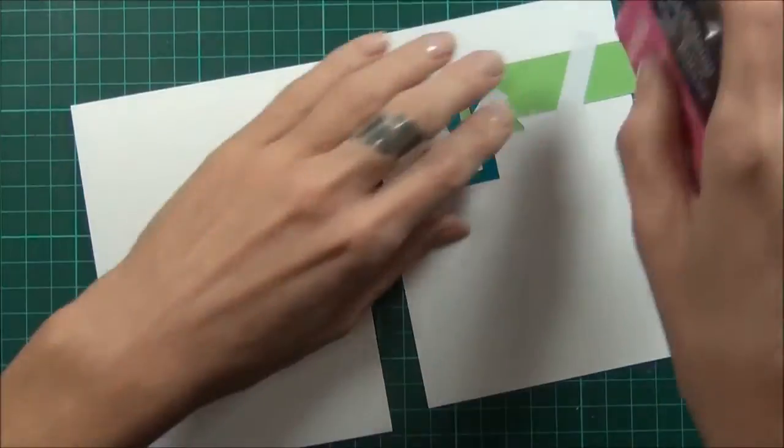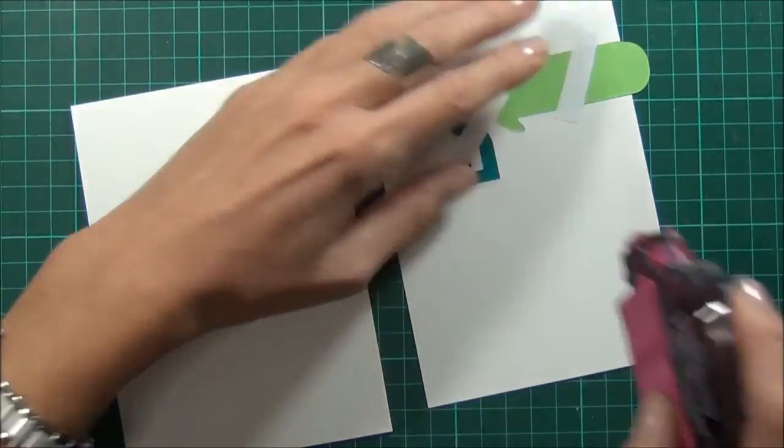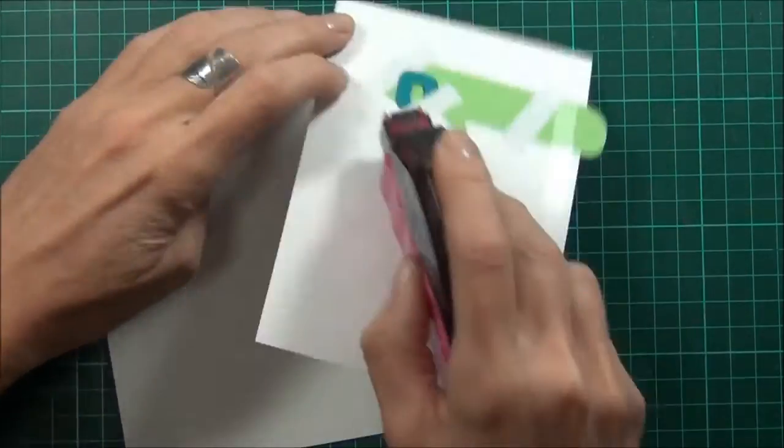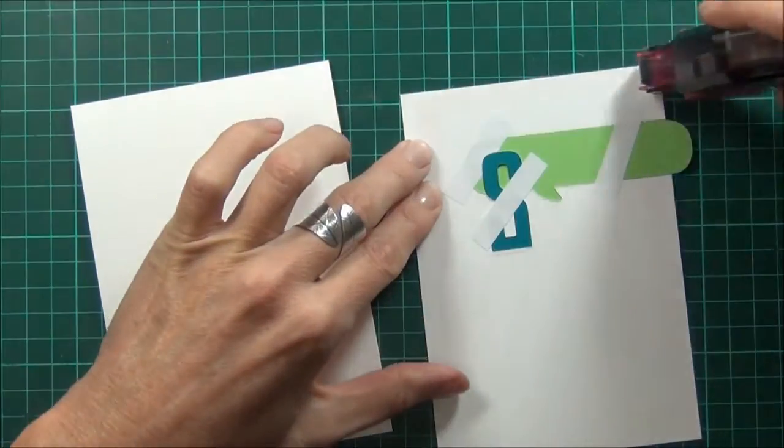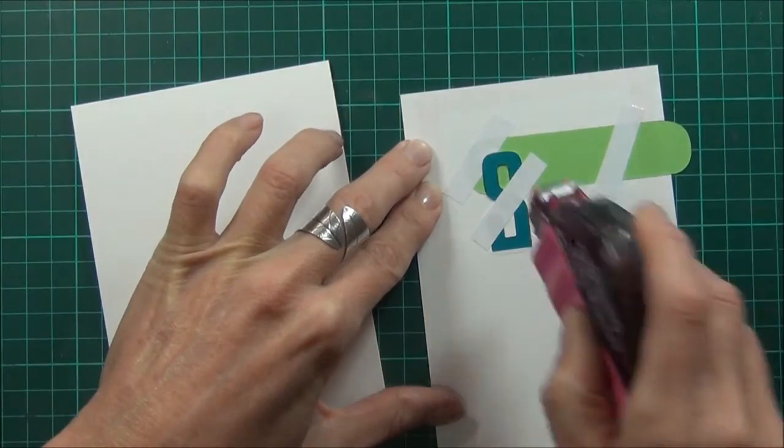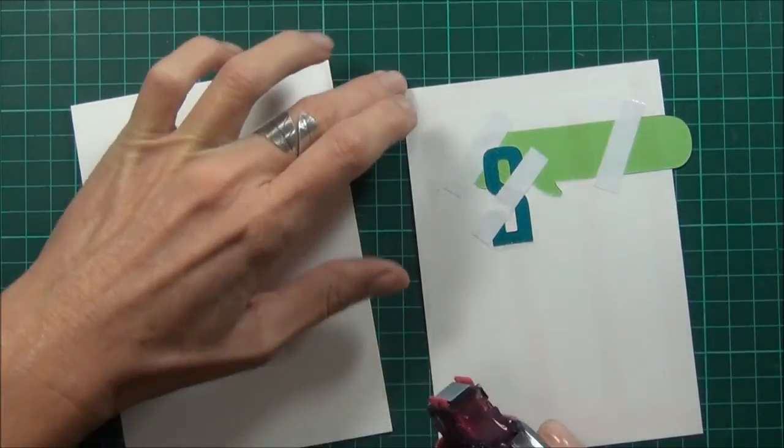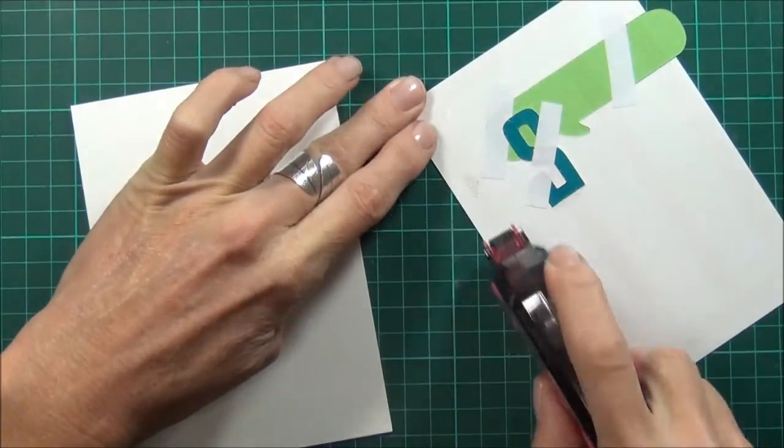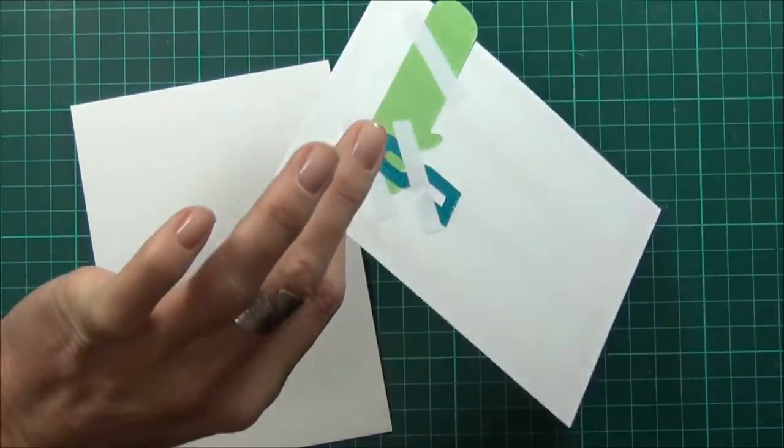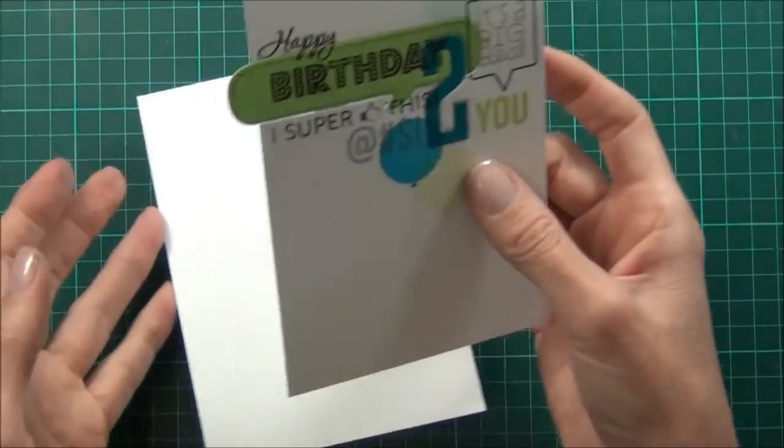So I used my stamp runner to attach this to the front of my card, which is cut the same size. I'm really liking this stamp runner—the adhesive seems to hold really well and it goes on nice and easy. It's not too big to hold in your hand either, and it's actually quite good value.